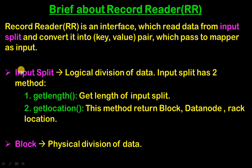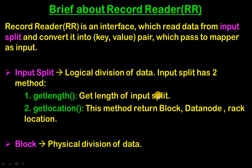What is an input split? Input split is the logical division of data. Input split has two methods: first is getLength, which gets the length of the input split, and second is getLocation, which returns the block, data node, and rack location.